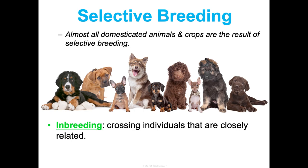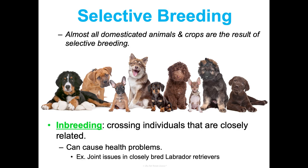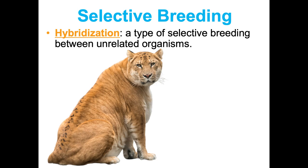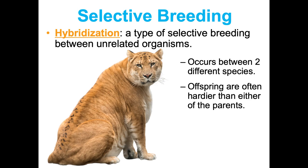One downside of selective breeding is inbreeding, where crossing closely related individuals can result in health problems — like Labrador Retrievers that are heavily inbred developing joint issues as they age. Another type is hybridization, which involves breeding unrelated organisms. You can't make a bird and a dog reproduce because their genomes are too different, but organisms of different species with close enough genomes can reproduce. An example is the liger — a lion and tiger combo — where the resulting offspring is often a heartier mix of the two parents.